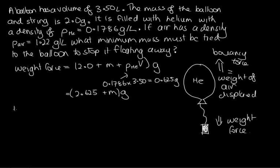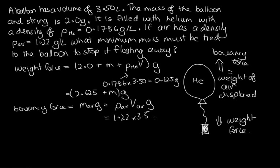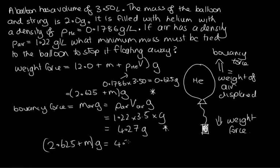The buoyancy force equals the weight of the air displaced: mass of air × g = density of air × volume × g = 1.22 × 3.5 × g = 4.27g. Setting buoyancy force equal to weight force: (2.625 + m) × g = 4.27g. The g's cancel out, so the final mass m = 4.27 − 2.625 = 1.645 grams, approximately 1.65 grams — that's the mass that must be tied to the end of the balloon.